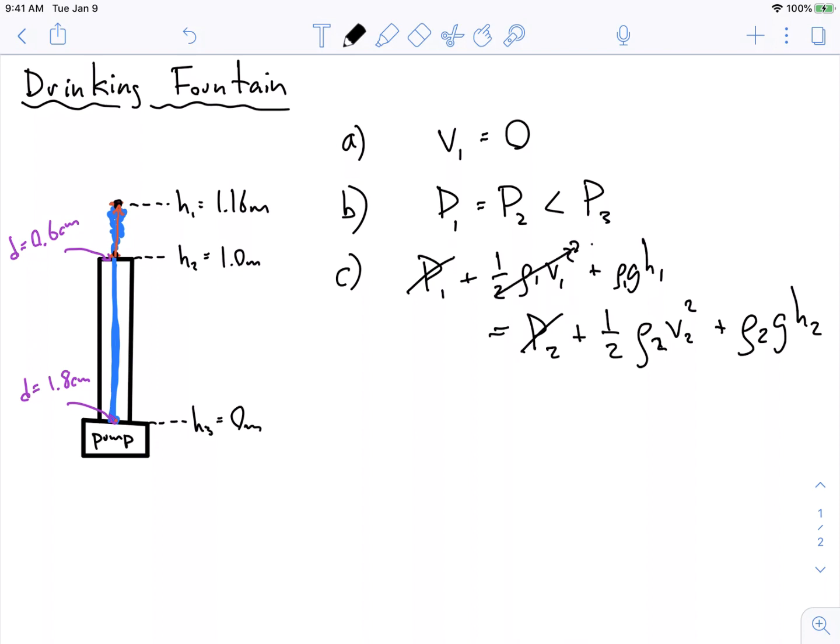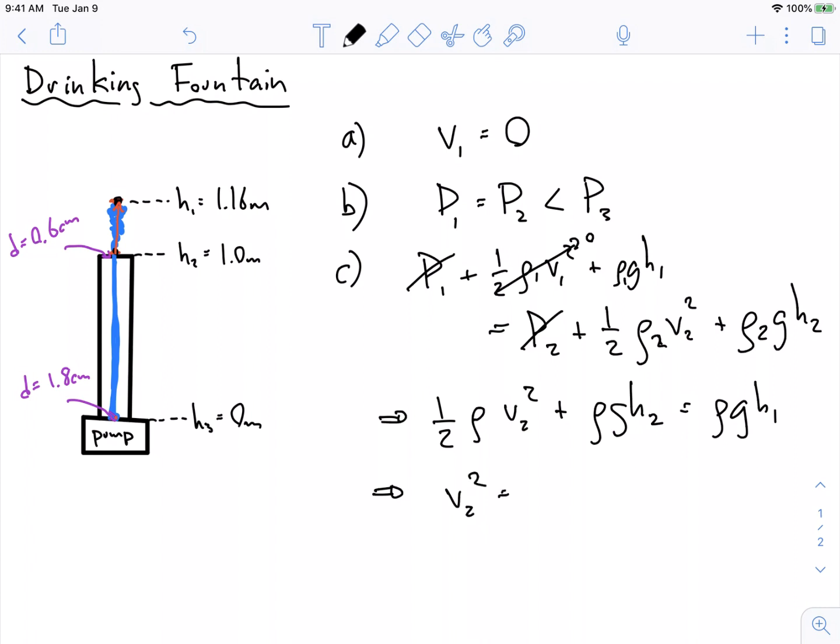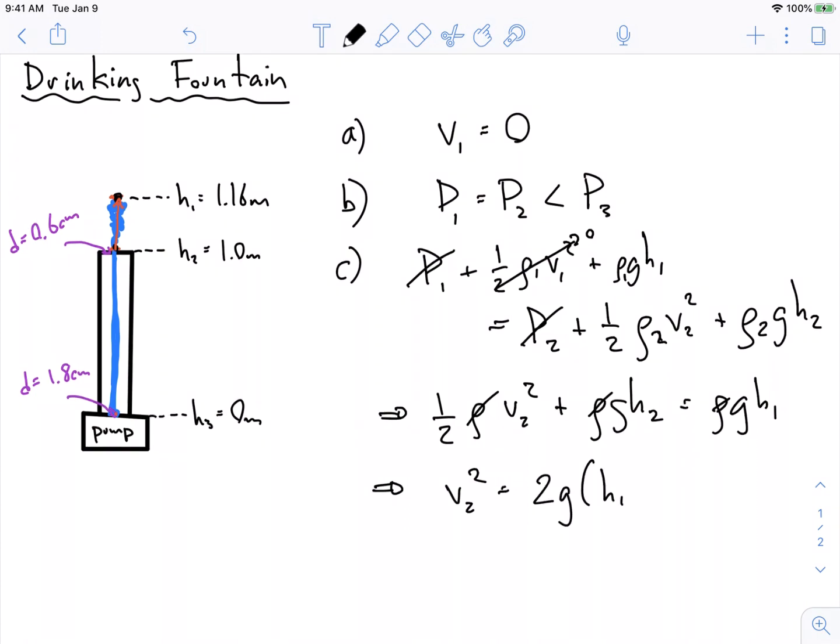We also know that v₁ is actually equal to zero - that's what we found out. And we can rewrite this equation as one-half ρ₂v₂² plus, well the density isn't changing - this is water, it's incompressible, so let's make ρ₁ equal to ρ₂ equal to just ρ. One-half ρv₂² plus ρg h₂ equals ρg h₁. All these ρs cancel out, and we are left with v₂² equals 2g times h₁ minus h₂.